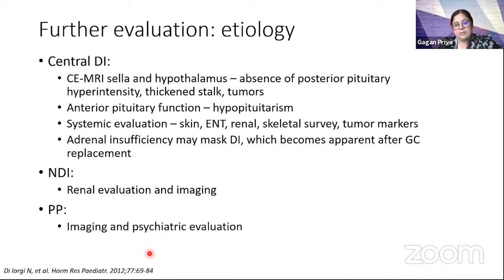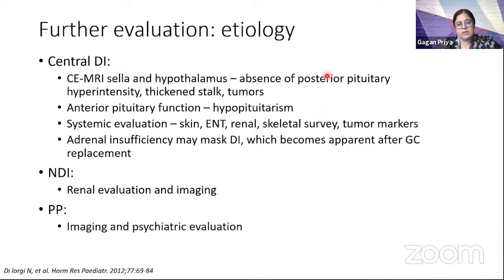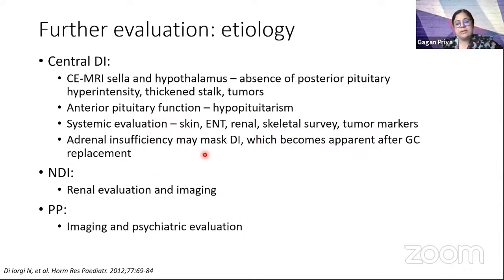A detailed evaluation of etiology is important. For central cases, contrast-enhanced MRI is important — findings may include absence of posterior pituitary bright spot, a thickened stalk, or central tumors. Anterior pituitary function must be assessed in central DI cases, as many causes also present with hypopituitarism. Langerhans cell histiocytosis must be evaluated with complete systemic evaluation. It must be remembered that adrenal insufficiency may sometimes mask DI, becoming apparent only after starting glucocorticoid replacement.